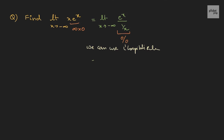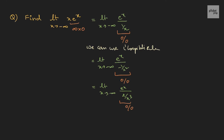Therefore, let us differentiate the numerator and denominator. This becomes limit x tends to negative infinity: the derivative of eˣ is eˣ, and the derivative of 1/x is negative 1/x². Now when we substitute negative infinity, we see that this is again 0/0 — an indeterminate form — so we can use L'Hospital's rule again. When we differentiate a second time, this gives x tends to negative infinity of eˣ divided by 2/x³. Again substituting negative infinity gives 0/0. We can keep doing this, but we observe it will never reach a determinate form — it always leads to 0/0. Therefore, this approach is not working.